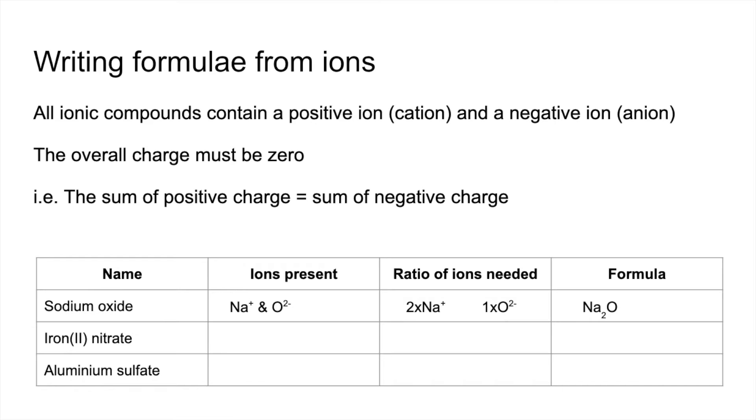Iron 2 nitrate now. So the Roman 2 signifies that we've got Fe2 plus present. Nitrate, NO3, 1 minus. So again, one of each won't work. We need two nitrate ions for every Fe2 plus ion. Which means the formula is written like this. You can see a bracket being used there for the polyatomic ion. So we need two of those for every Fe2 plus ion.